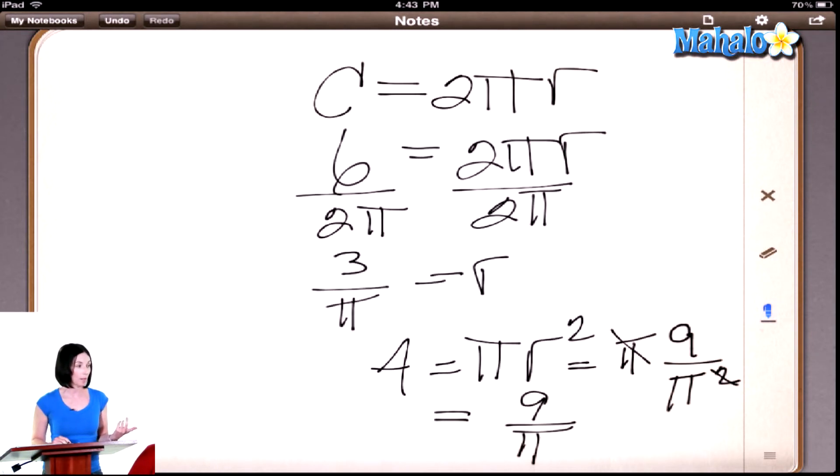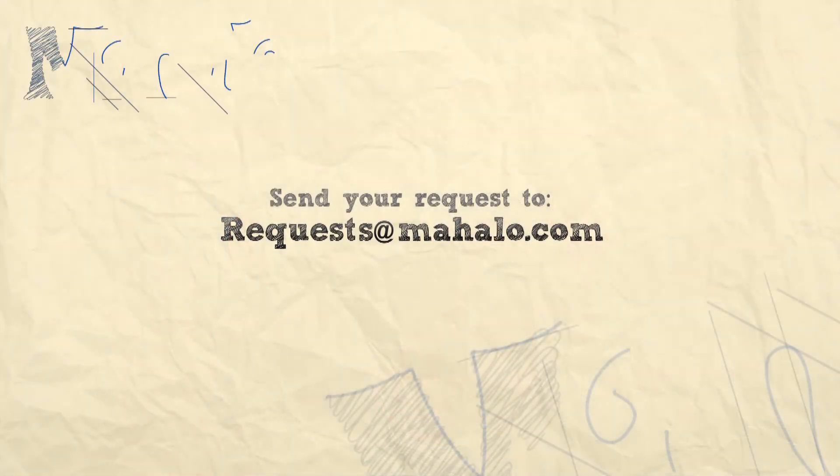It's a really easy mistake to make, though, to look at that six and assume that that's the diameter and not the circumference, because otherwise you did the problem exactly right. Okay, cool. Good. Thanks for learning with us today. If you'd like any more information on these topics, click on the links below. And if you have a specific request, please send it to requests at mahalo.com. We'll see you later.